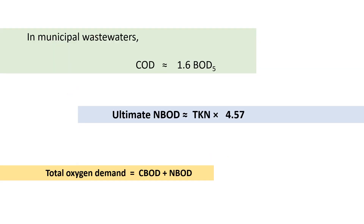In municipal wastewater, the value of COD is almost 1.6 times more than BOD5, so COD ≈ 1.6 × BOD5. The ultimate nitrogenous BOD equals total Kjeldahl nitrogen multiplied by 4.57. This is a very important formula. The total oxygen demand equals C-BOD plus N-BOD, meaning carbonaceous BOD plus nitrogenous BOD.